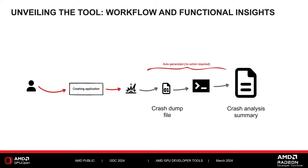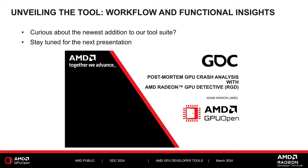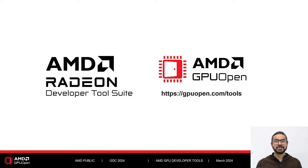Let us look at the tool workflow. Similar to previously discussed tools, using RDP, the user first enables crash analysis mode. While RDP runs in the background, the user launches the crashing application. RDP detects the newly launched app and from startup tracks all memory transactions and command submissions. Once the app crashes, all tracked information is written to a binary crash dump file. RGD's CLI tool then runs in the background to generate the crash analysis summary file, presenting information helpful for debugging the crash and finding the culprit. For more detail, please look at the video titled 'Post Mortem GPU Crash Analysis with AMD Radeon GPU Detective'. To download the Radeon Developer Tool Suite and watch more videos, please visit GPUOpen.com. Thanks for watching, and goodbye from myself and Chris.